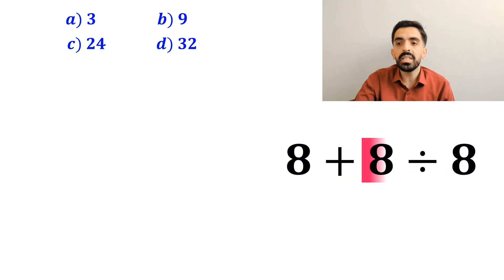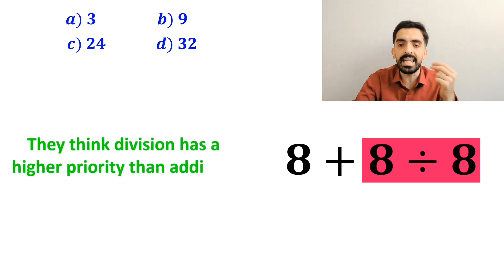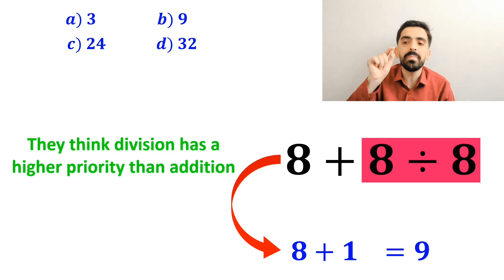So this expression simplifies to 8 plus 8 divided by 8. Then they go for the division between the two eights, because they think division has a higher priority than addition, and rewrite this expression as 8 plus 1, which ultimately gives them the answer 9.